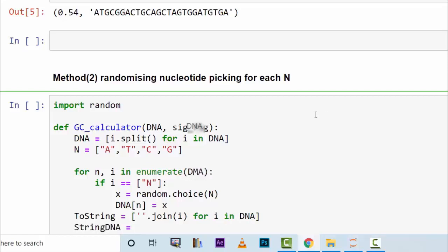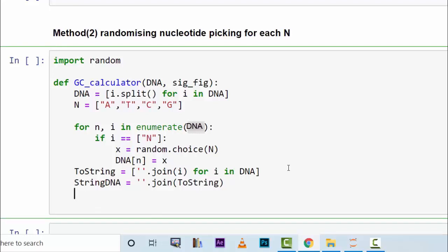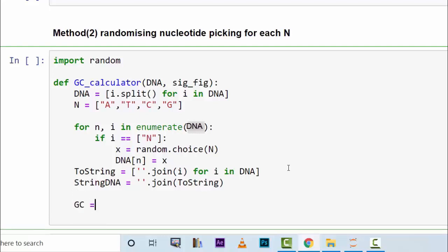So for every occurrence of any nucleotide in your DNA sequence we change it to list per se. Then we have another variable we say StringDNA is another variable that we have and is equal to empty string dot join the above variable which is ToString. So we change this to string this way. That's done. Now we can perform the GC content calculation. We can say GC equals round. Now we can have this StringDNA variable dot count G.